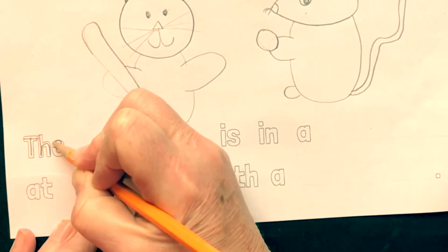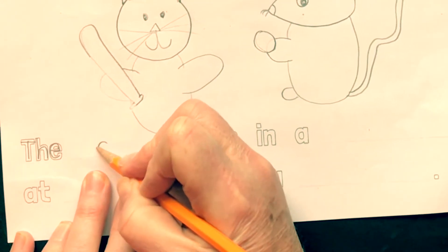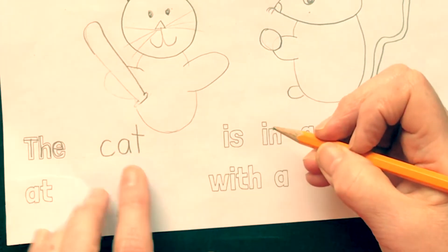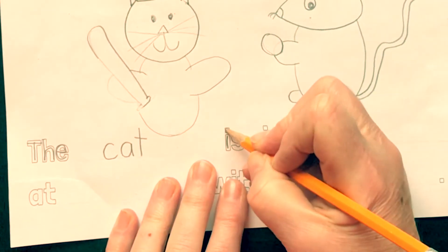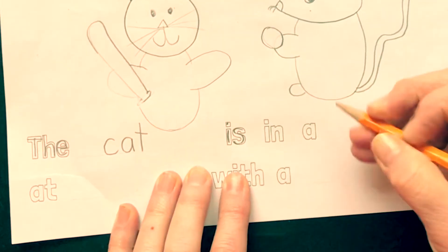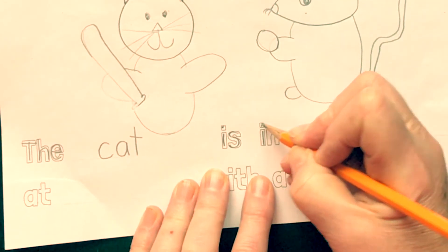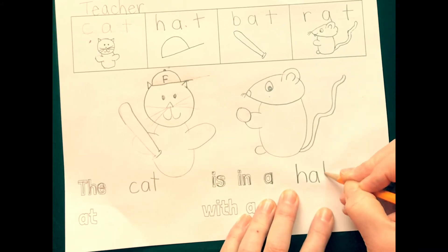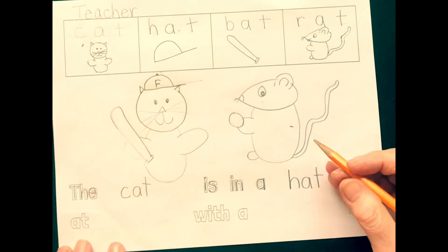Now let's trace inside all those letters. The, T-H-E. Now cat. C-A-T. And we put those letters close together and then spaces between each word. Is, S makes the Z sound. In a hat. Sound out hat. H-A-T. And we can look back up at our picture if we need to.